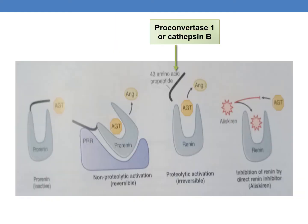Pro-renin is inactive, and the 43 amino acid pro-peptide blocks the active catalytic site. Non-proteolytic activation is reversible and occurs by binding of pro-renin to the pro-renin receptor, leading to conformational changes that unfold the pro-peptide and expose the active site. Proteolytic activation by proconvertase 1 or cathepsin B removes the 43 amino acid pro-peptide and is irreversible.